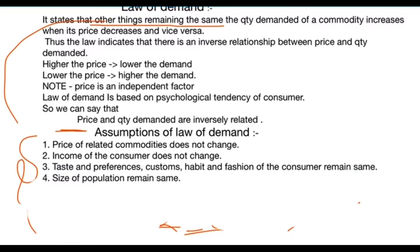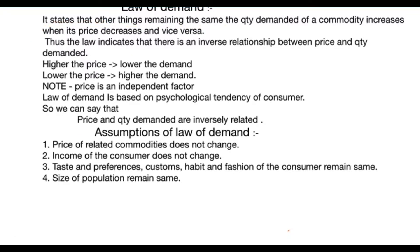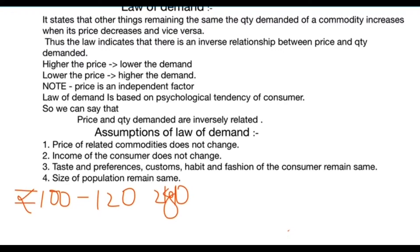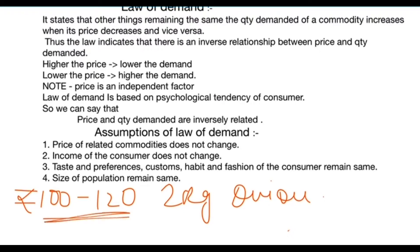The next assumption is that income of the consumer does not change. When income of a consumer increases, they buy more goods; when income decreases, they buy less. For example, when income increases from rupees 100 to 120, they may buy two kgs of onion, whereas earlier they were buying only one kg. So income of the consumer should also remain constant.